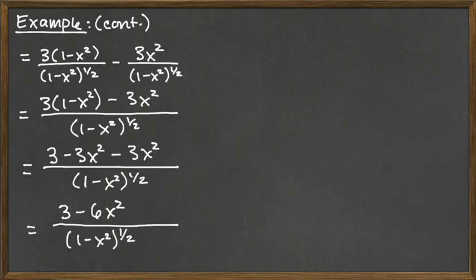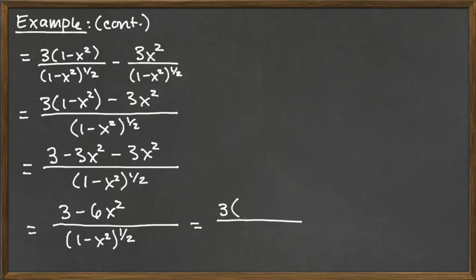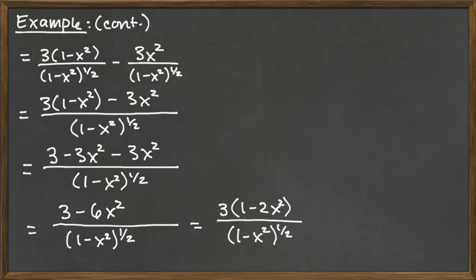We can factor out the common factor of 3 on the top, since often we care most about the factored form. Pulling out the 3 leaves us with 1 minus 2x squared as the other factor on top, over 1 minus x squared raised to the 1 half power. Looking at that ratio, there are no common factors on both the top and the bottom that would reduce to 1, so this is our cleanest factored final answer.